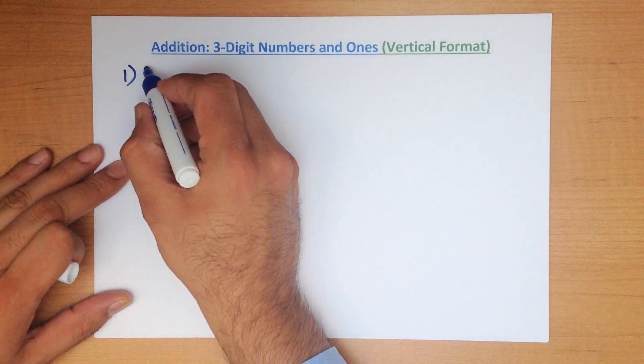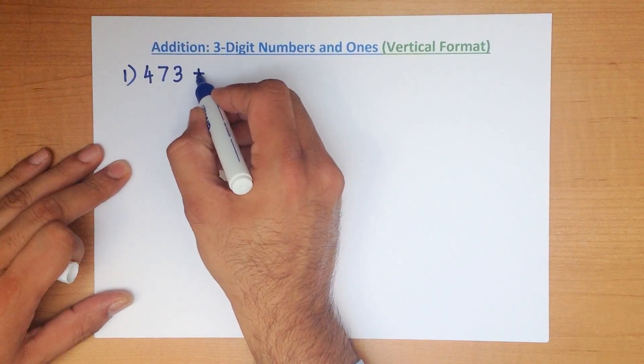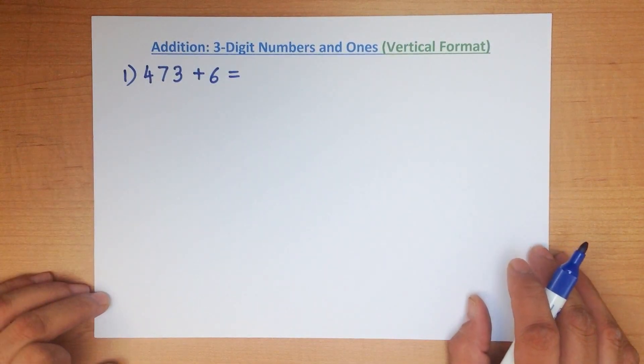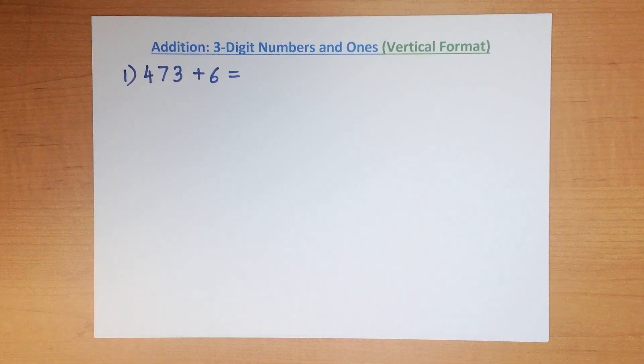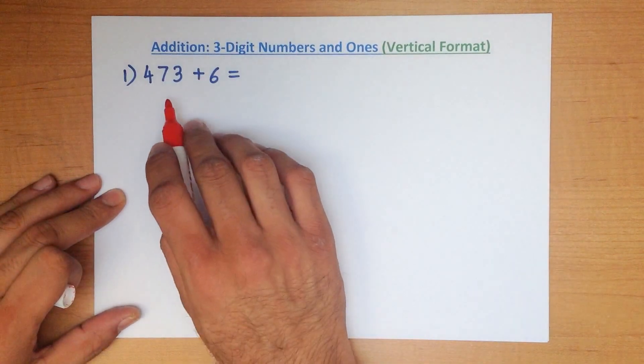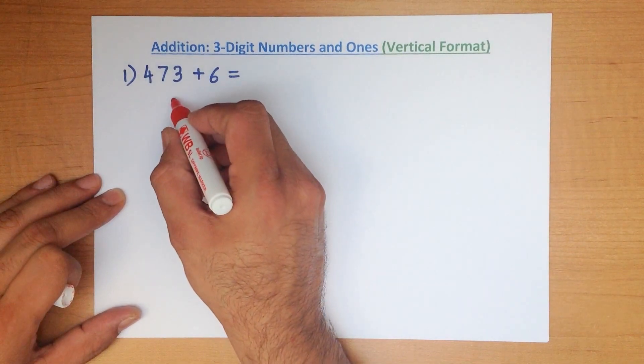What is 473 plus 6? You'll know the routine by now. The first thing we do is we write these numbers down in the vertical format, in columns. So let's do that.